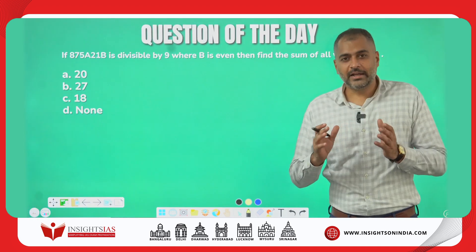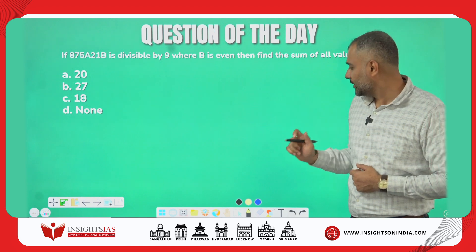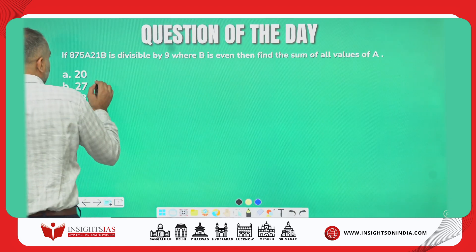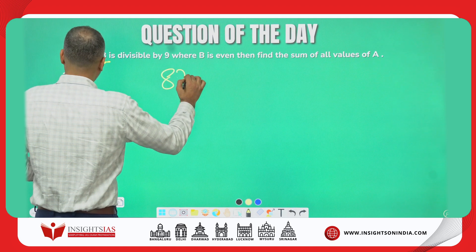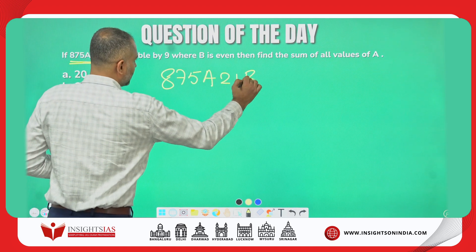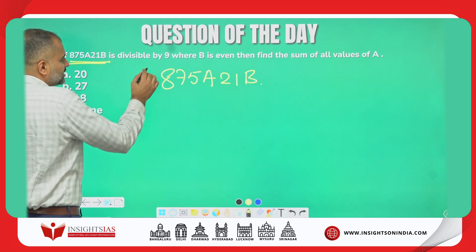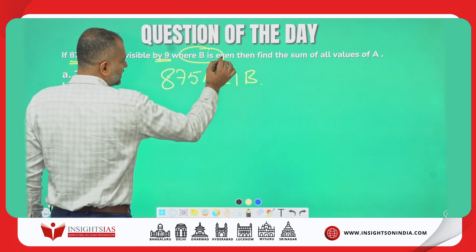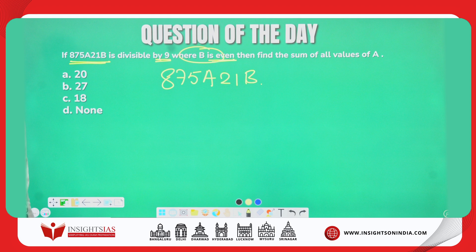5x is the income of B, which equals ₹200. Now, today's question: there is a number in the form 875a21B, where A and B are digits and the number is divisible by 9 and B is an even number. Find the sum of all values of A.